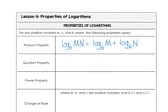The quotient property: the log of a quotient, m divided by n, is the difference of the logs — log base b of m minus log base b of n.